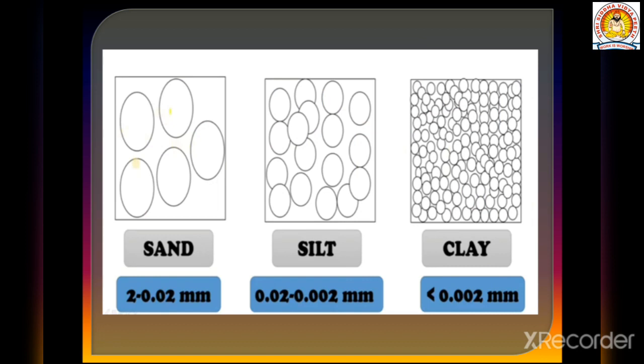Here you can see a picture showing examples of each particle. Sand particles are very big compared to silt and clay. Silt is medium size. Clay particles are very small and closely packed.